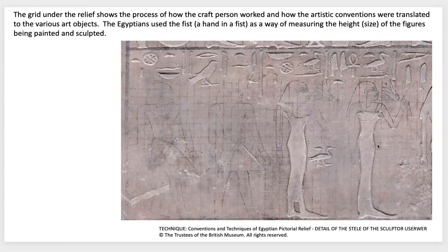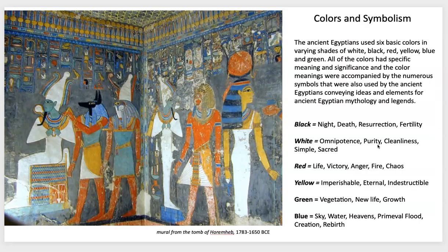Here is an image from the Book of the Dead from 1285 BCE, which I'll be talking about later. This is a visual example of what the artistic conventions would look like. There would have been mathematical drawings to indicate how to create this stylized form of visual representation. The Egyptians used the fist of a hand as a way of measuring height so that everything could be very accurate in the reliefs created. Here is a stele that shows this process.